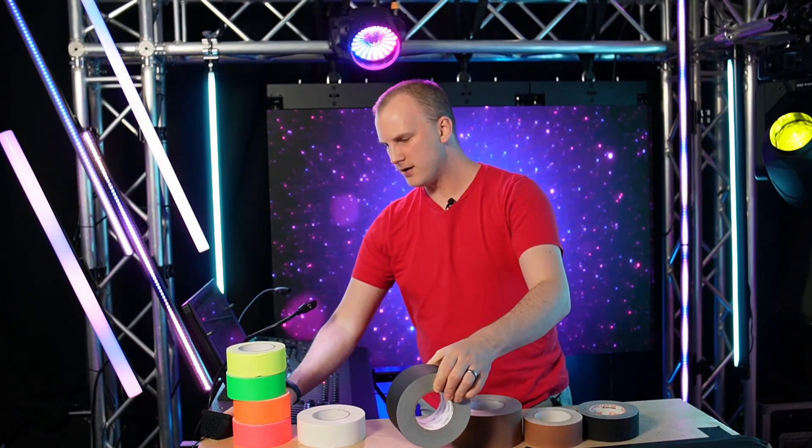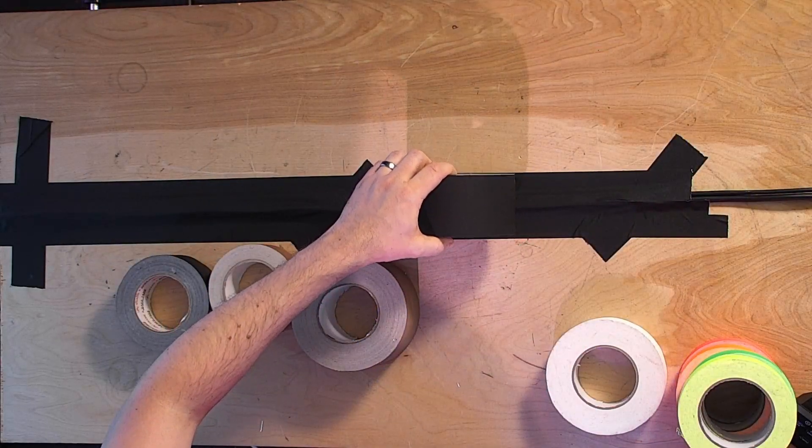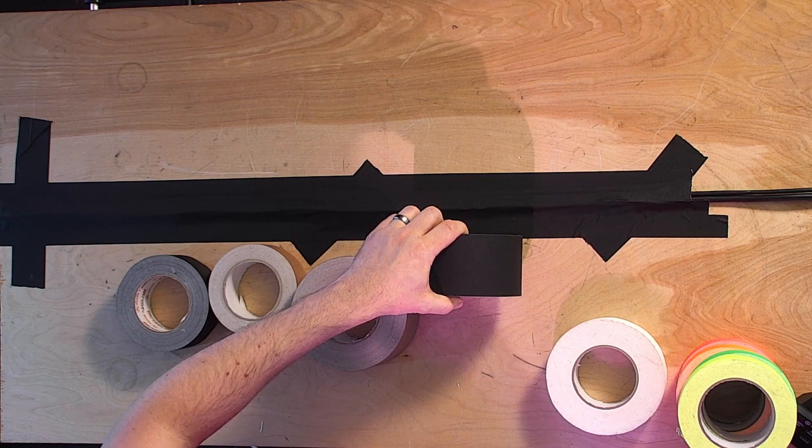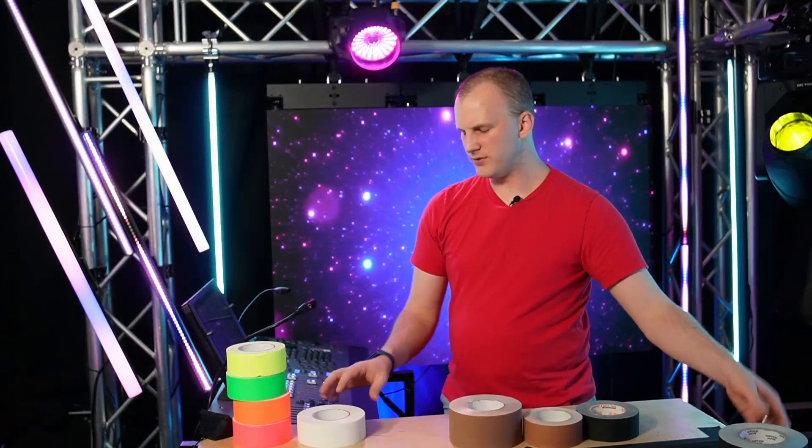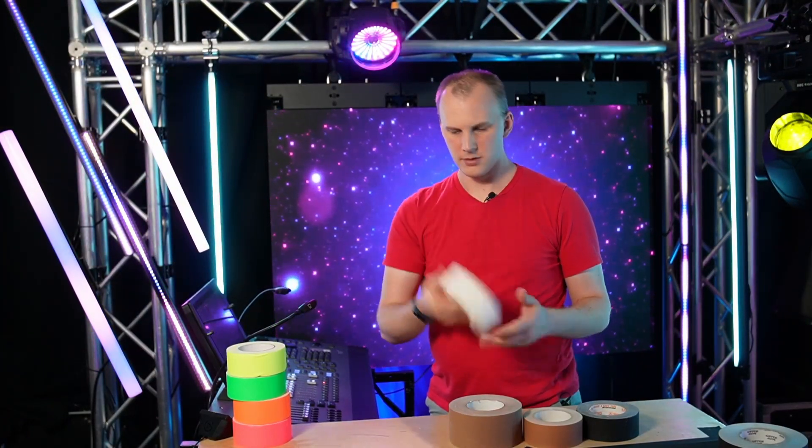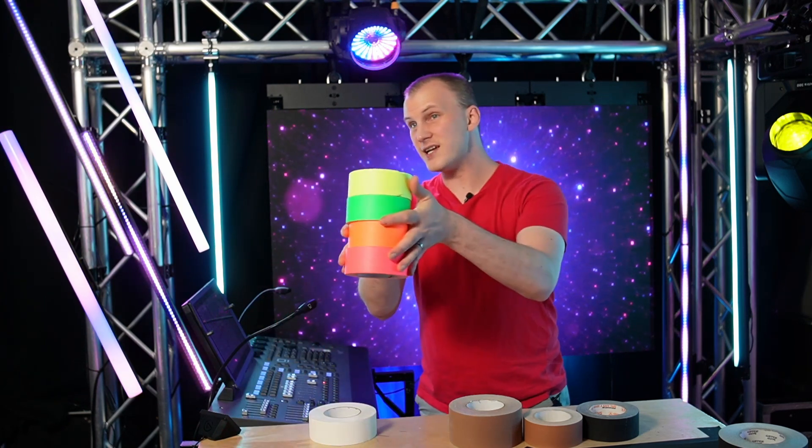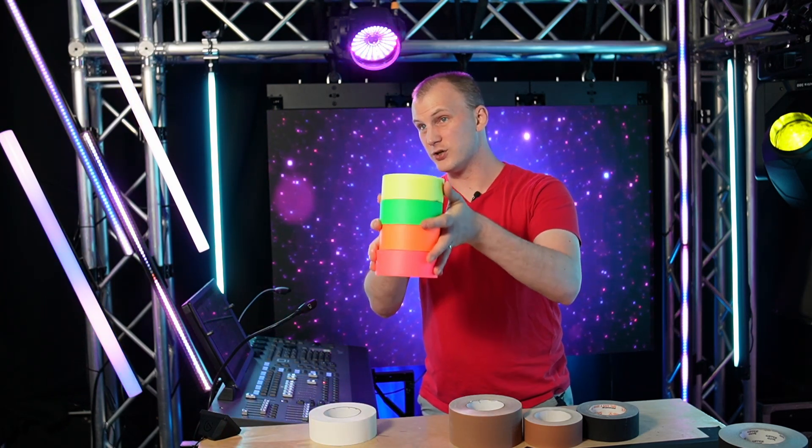Actually let me grab one so you can see it. We got it in four inch black, nice huge fat, you can see how that looks there on the cable itself, looks really great, covers it up well. Then we've got white, nice for labeling, as well as our fluorescents in 30 yard rolls.